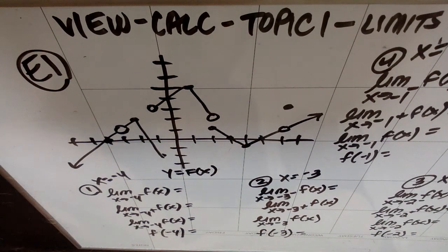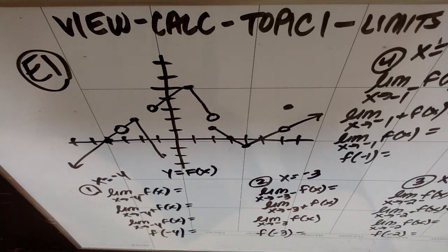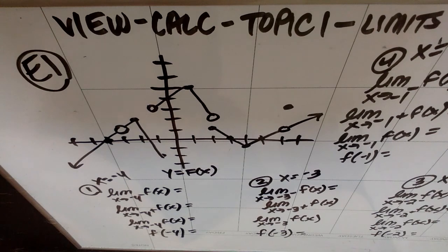We're going to do example one in this video, or at least the first half of it. It's in a table on your actual packet, but we'll make it work. One way to think about these left and right limits is to pretend that you have a little stick figure, a little person or dude walking on the curve.